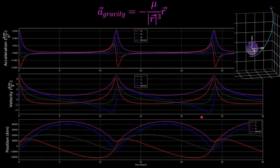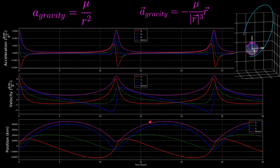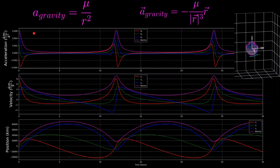Now let's look at a more complex case: a highly elliptical Molnia orbit, shown on the top right. It's highly elliptical because there is a large difference between apoapsis — the farthest point from Earth — and periapsis — the closest point. Looking at the position plots, we can see maximums at apoapsis and minimums at periapsis. At periapsis, the spacecraft is closest to Earth, so velocity and acceleration are both at a maximum. This follows from Newton's universal law: acceleration equals mu over r squared, so the smaller r gets, the larger the gravitational acceleration.